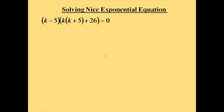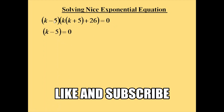From this factored equation we can say either k - 5 = 0 or k(k + 5) + 26 = 0. Taking the first part: k - 5 = 0, so k = 5. Since k = 2^x, that implies 2^x = 5.